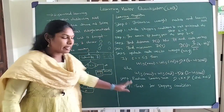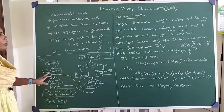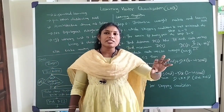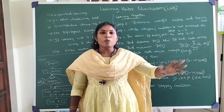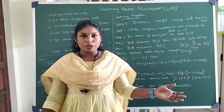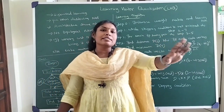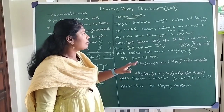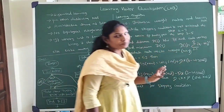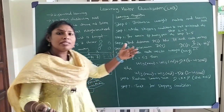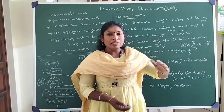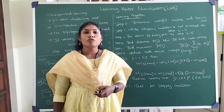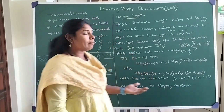You will understand better when I explain the algorithm. The process begins with initialization. For initializing weights in Learning Vector Quantization, we consider some input patterns and assign them as weight vectors. First step is initialization: we initialize the weight matrix and the learning rate. Once done, you will have n number of input patterns to be presented to the net. We first check for the stopping criteria, which might be the number of iterations needed.